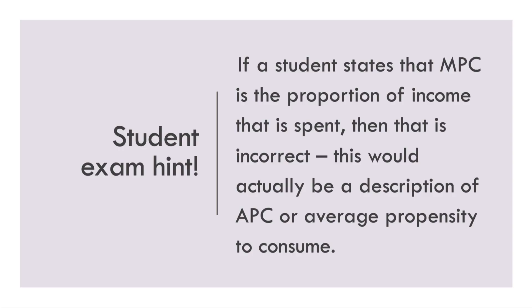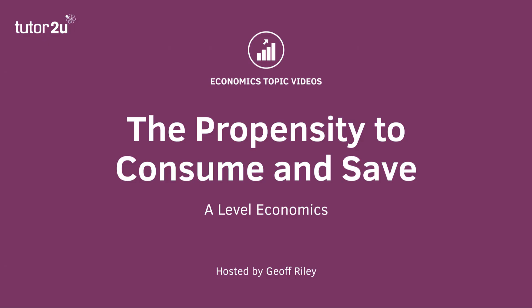A little exam hint to finish with: often students state in exam scripts that the MPC — the marginal propensity to consume — is the proportion of income that is spent. That's a common mistake and it's incorrect. That would actually be a description of the average propensity to consume. So check your notes on this — it's important to make a distinction between these two concepts.